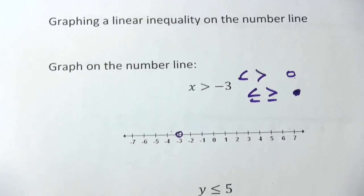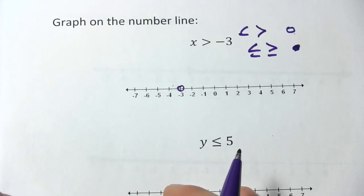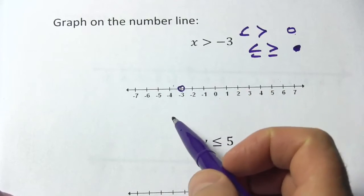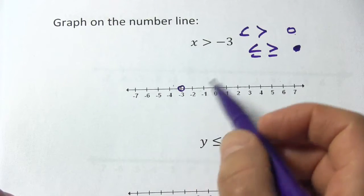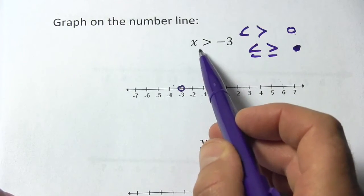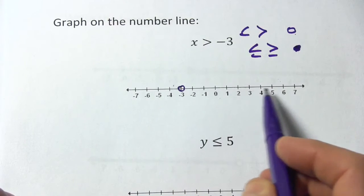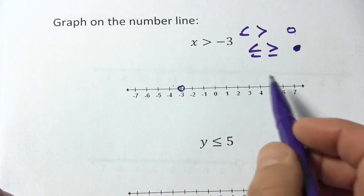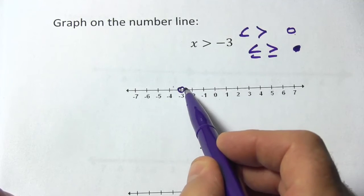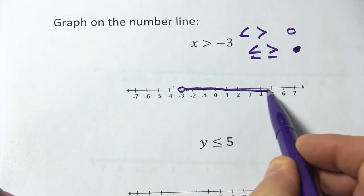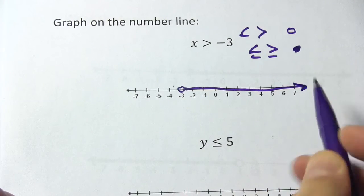The second part is the arrow, and the only trick here is you have to figure out which way it's pointing. Greater than means go in the direction the numbers are getting bigger, so our arrow would just be like that.